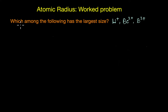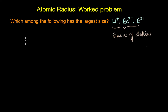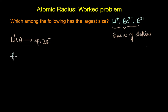The first question asks: which among the following has the largest size — Li+, Be2+, and B3+? We have three ions, and all of them are isoelectronic, meaning they have the same number of electrons. Lithium has atomic number 3, so it has three protons and three electrons, but Li+ has lost one electron, leaving only two electrons. Beryllium has atomic number 4 — four protons and four electrons — but Be2+ has lost two electrons, so it also has two electrons.